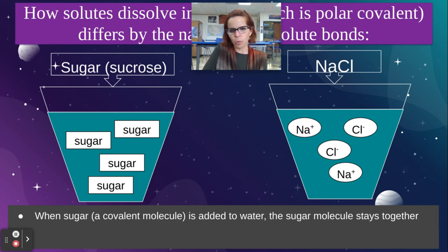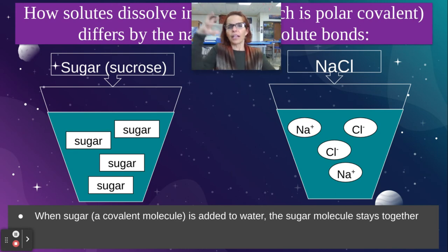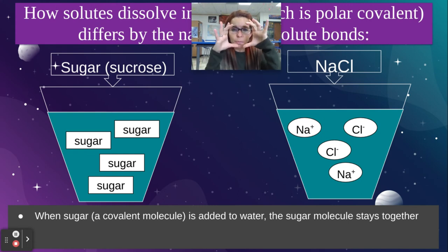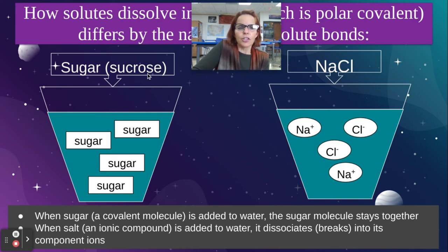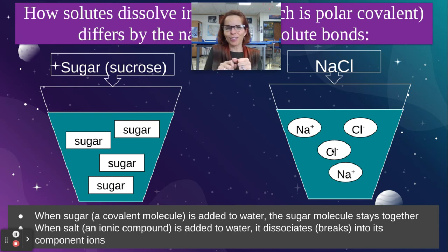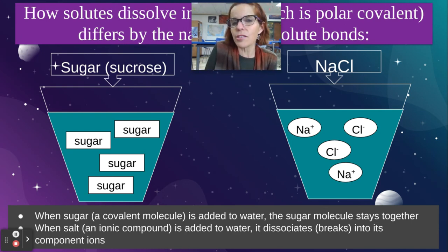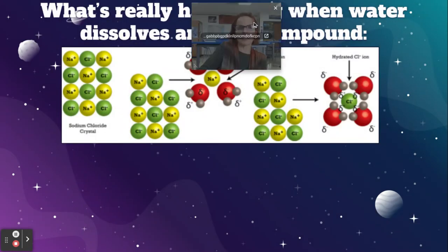When sugar, which is a covalent molecule, is added to water, the sugar molecule stays together and the water molecules go all around it — you still have this blob of sugar with water molecules surrounding it. When salt, which is an ionic compound, is added to water, it dissociates — it breaks up. You can see in the diagram that the sugars are all still together, but in the salt case the sodium and the chlorine separate from each other. We call that dissociation: when it breaks up into its component parts.